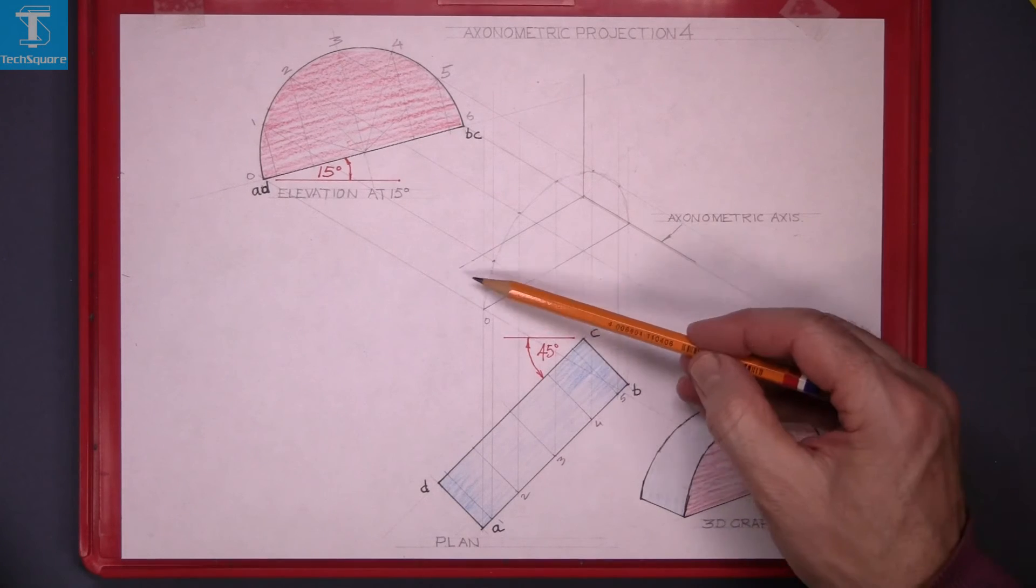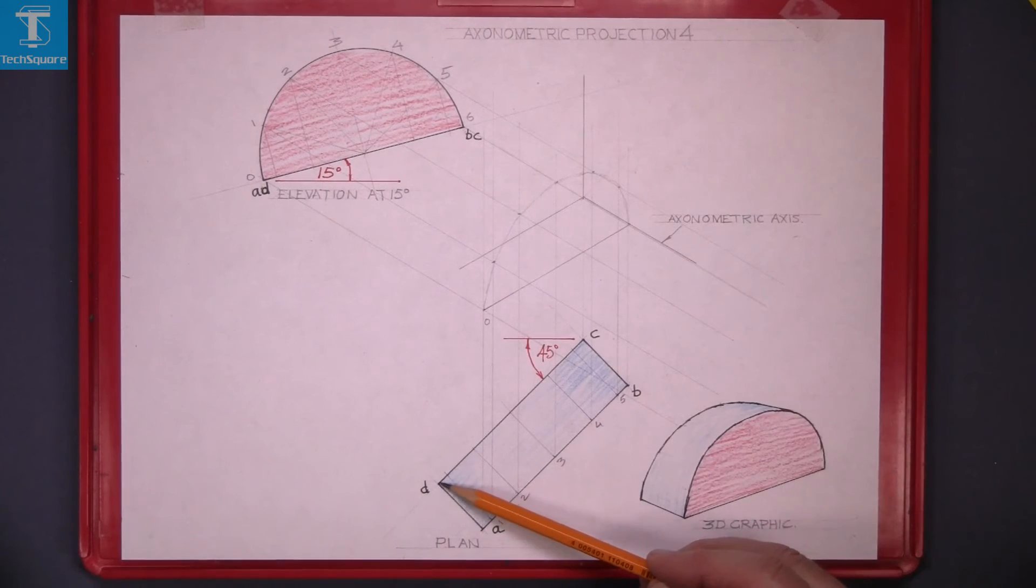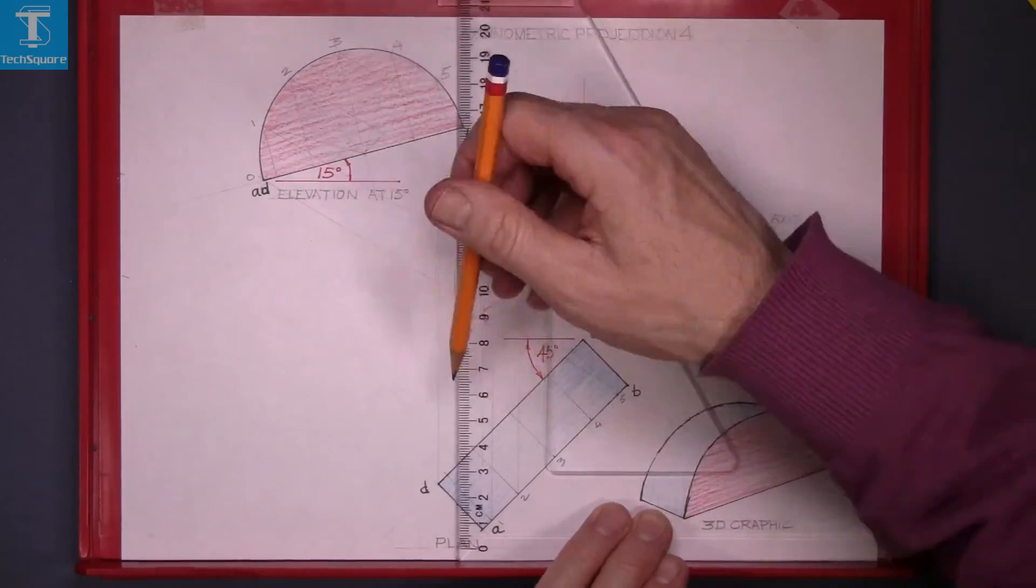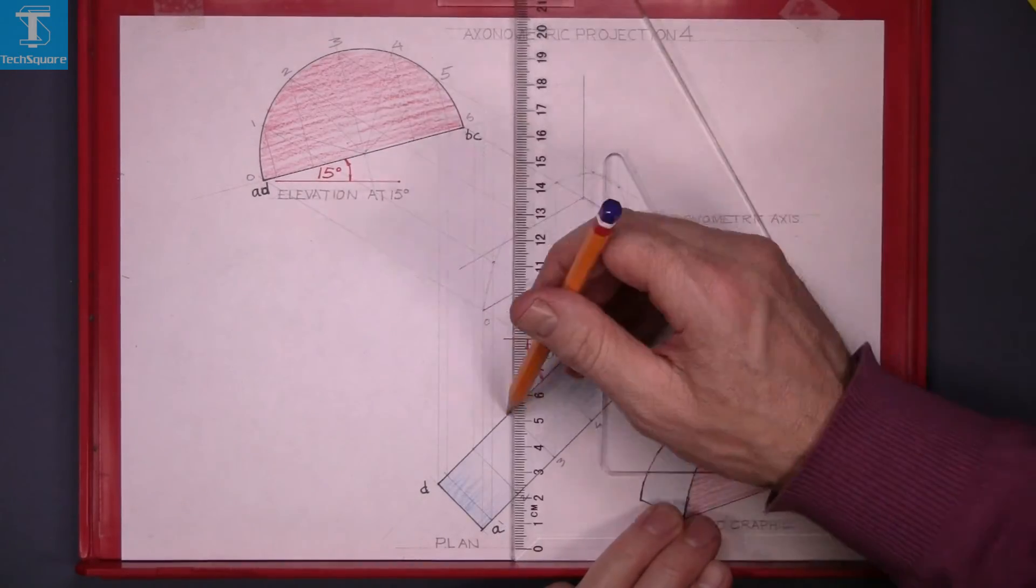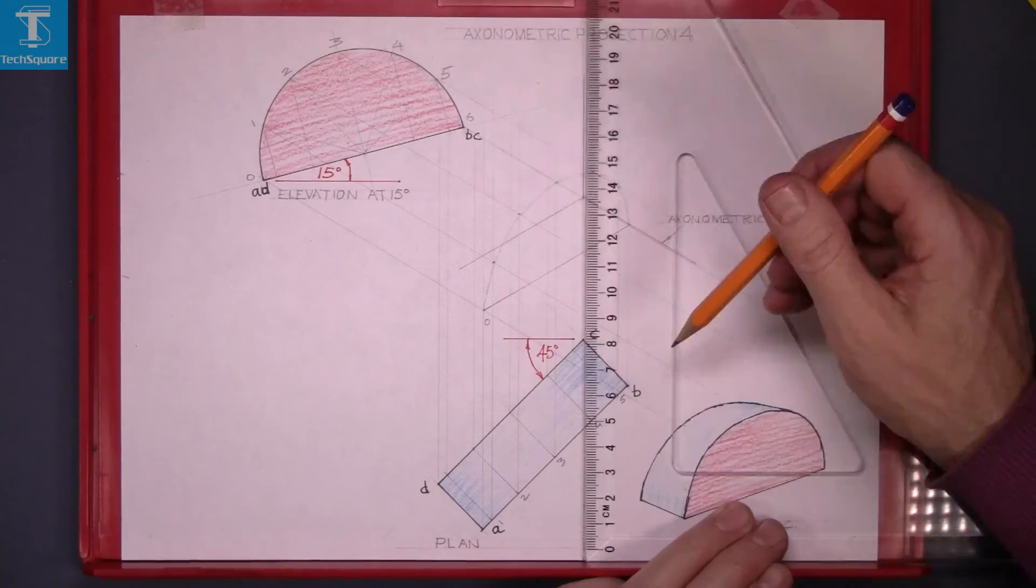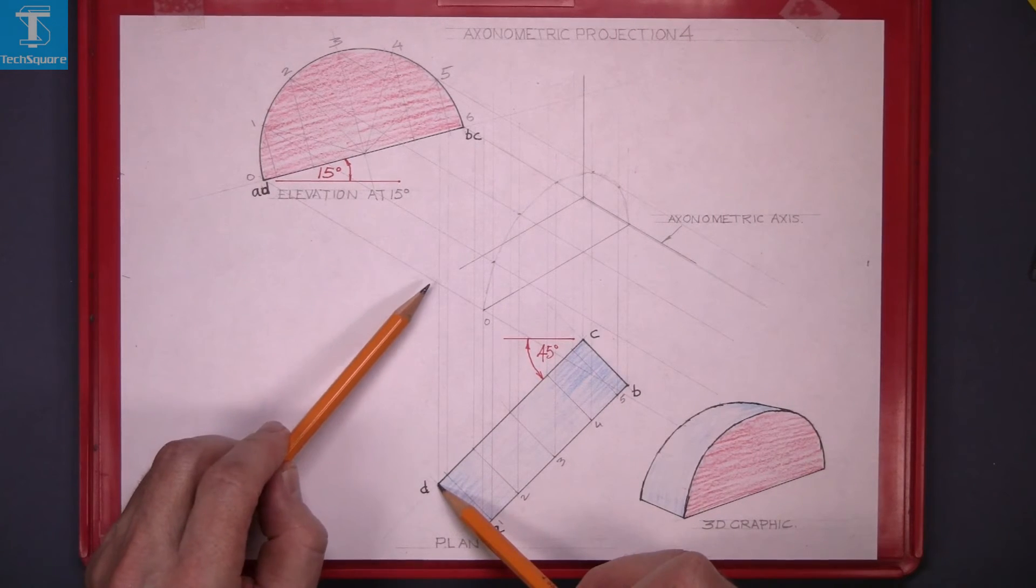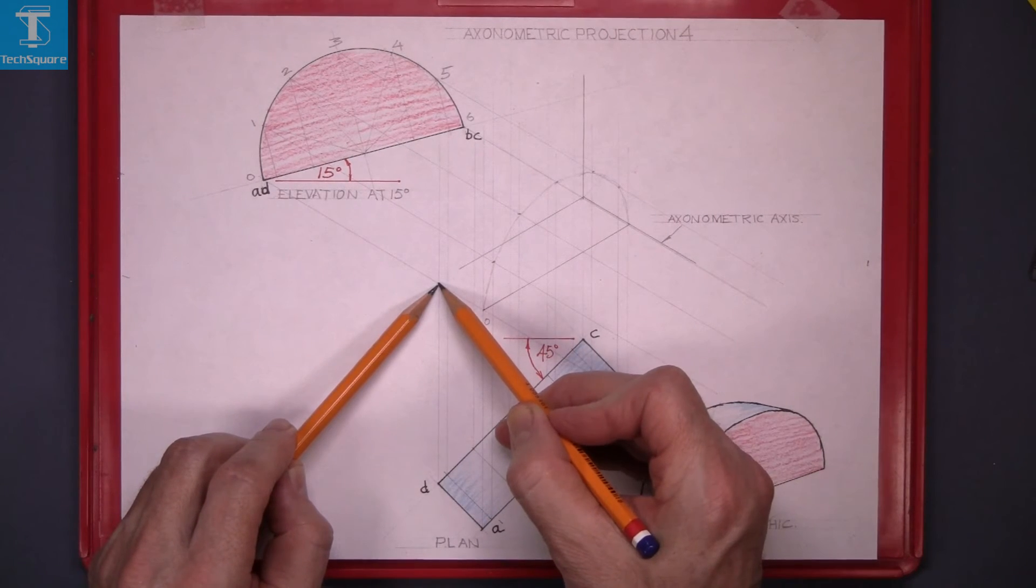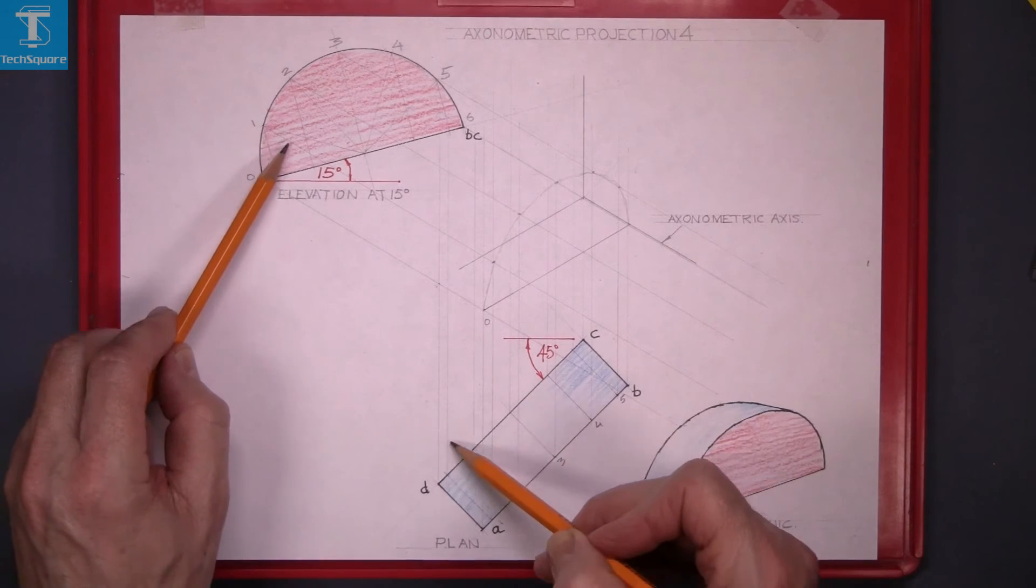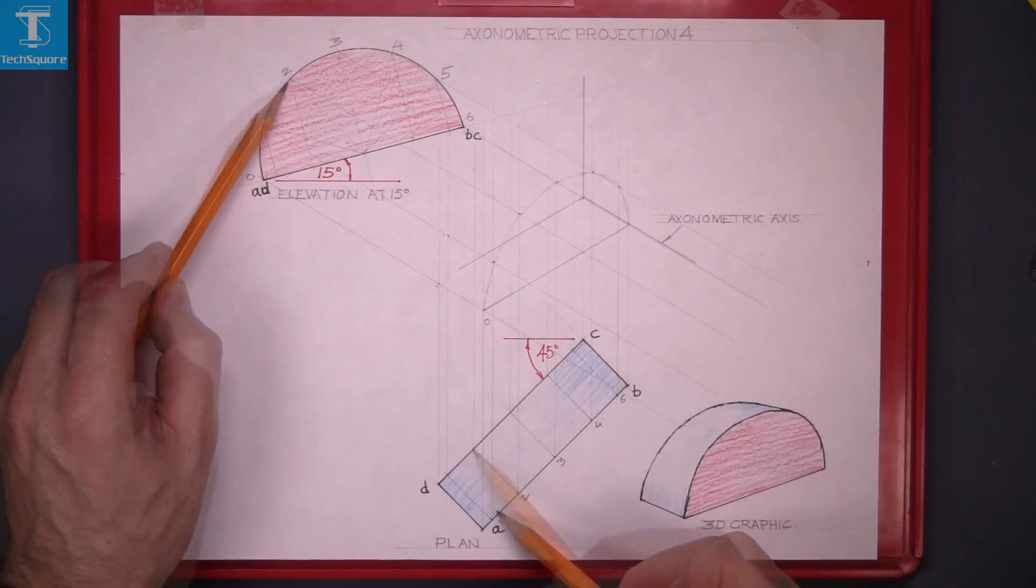Now to get the back of the solid, we bring up the back points. Project up the six points, and now trace the points. Follow the points up from the plan and out from the elevation and get each of the points as you've done with the front points.